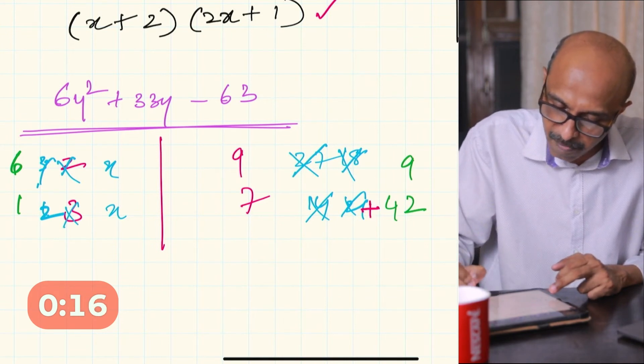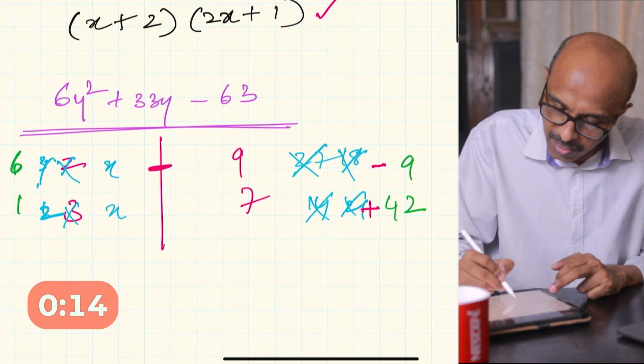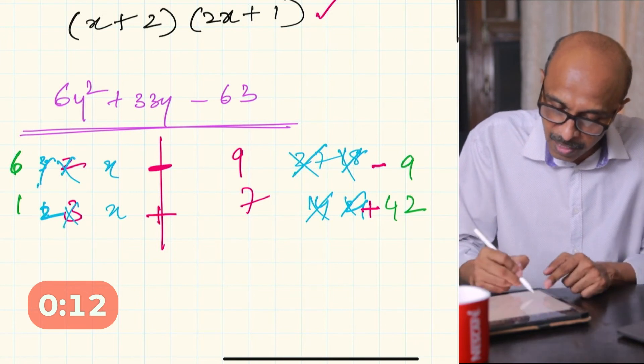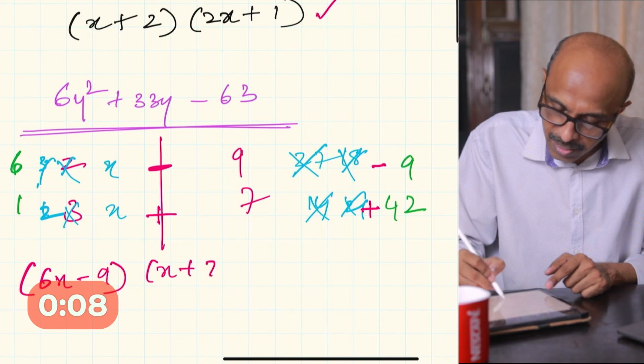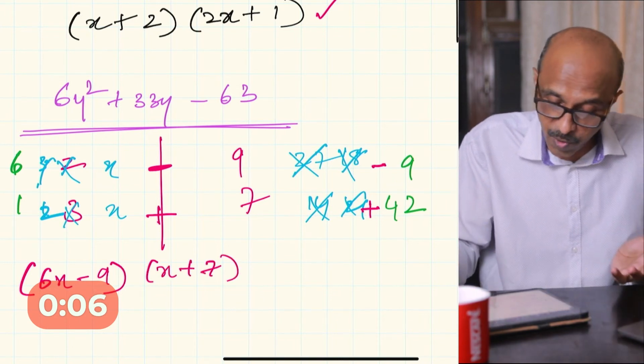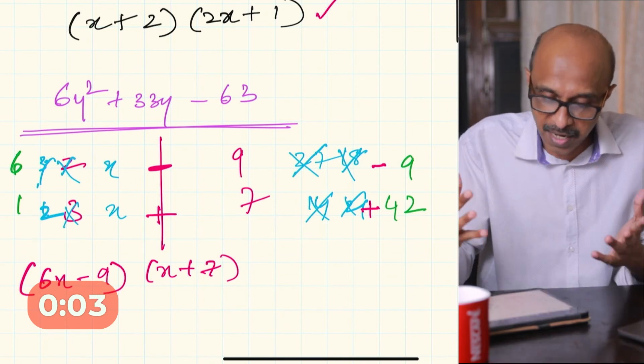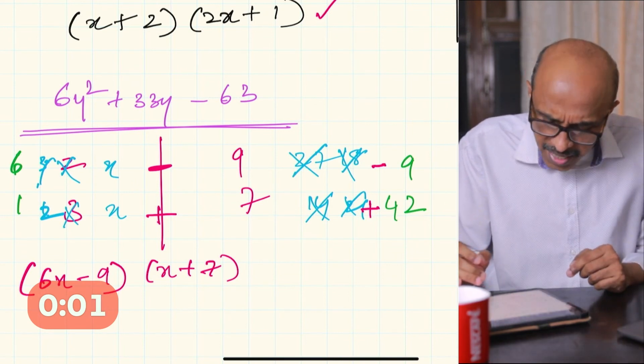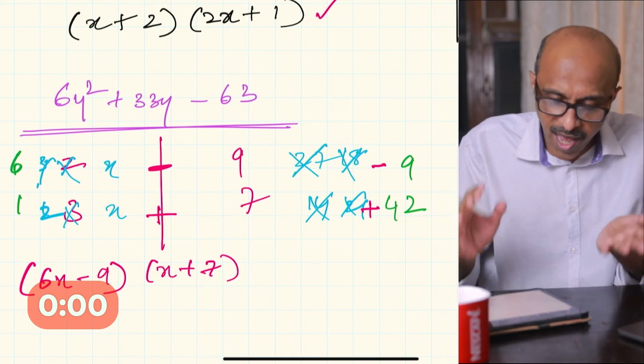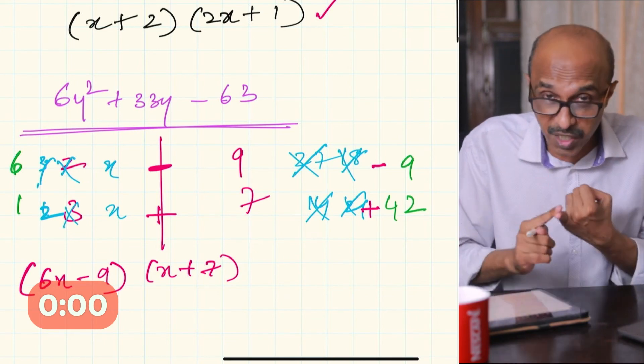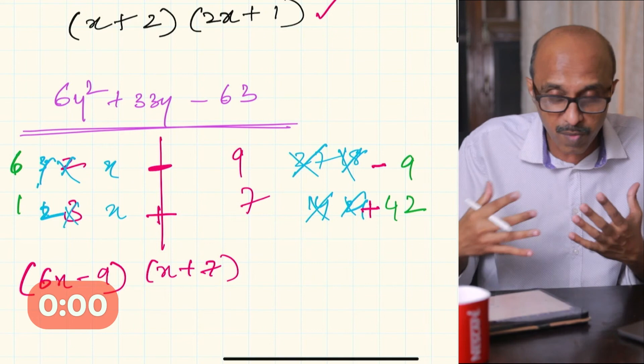The other factors are going to be 6 and 1. 6 times 7 is 42, 1 and 9, there you go, that should work out. If this is plus and if this is a minus sign, we put the sign here as it is. So it should be 6y - 9 and y + 7. How much time did we take? Still under a minute while I was talking and explaining. I think you can do it under half a minute if you have enough practice with your multiplication tables.